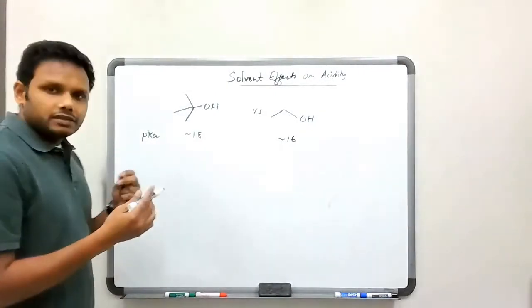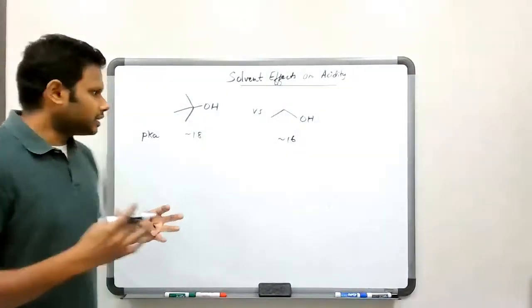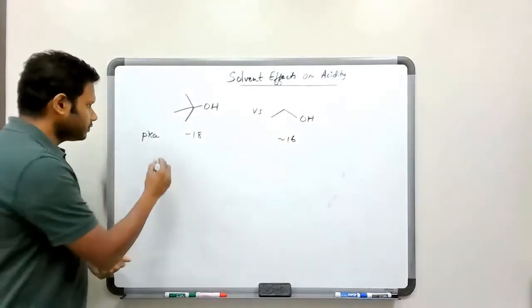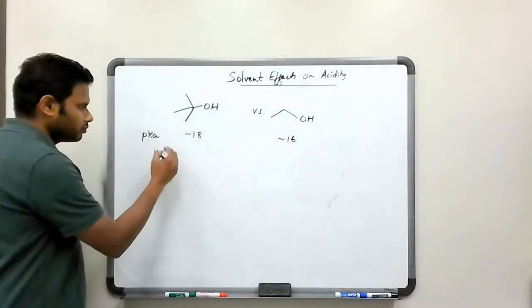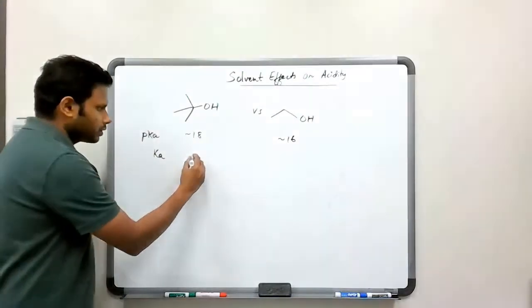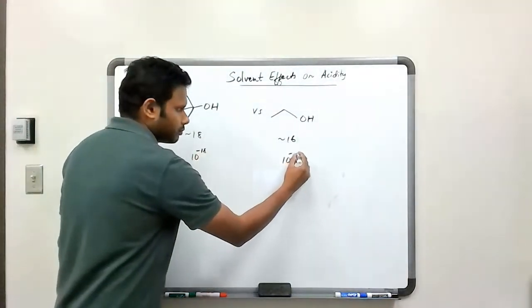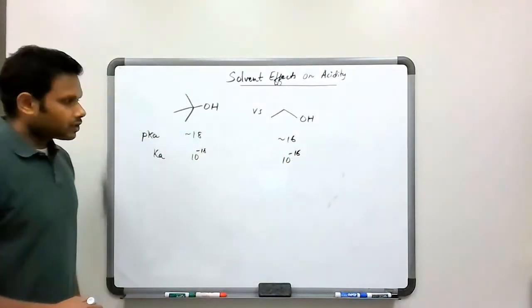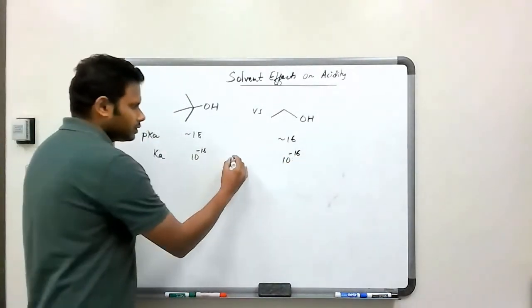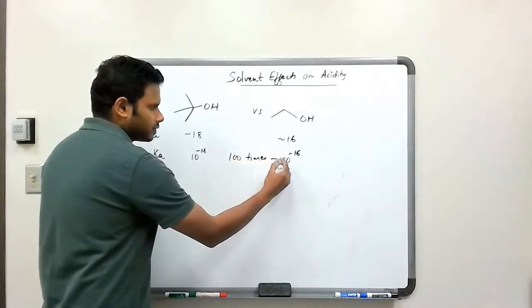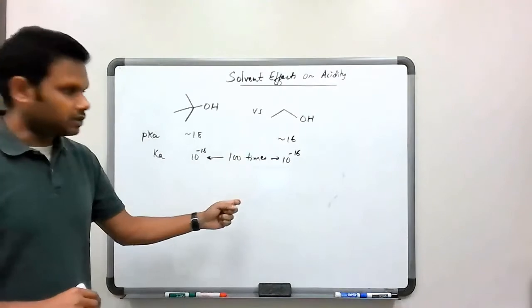Now, I want to emphasize that this two pKa unit is actually a huge difference, because when we convert that into Ka units, we're talking about 10 to the power of minus 18 and 10 to the power of minus 16, which means there's about 100 times difference between the two numbers here.